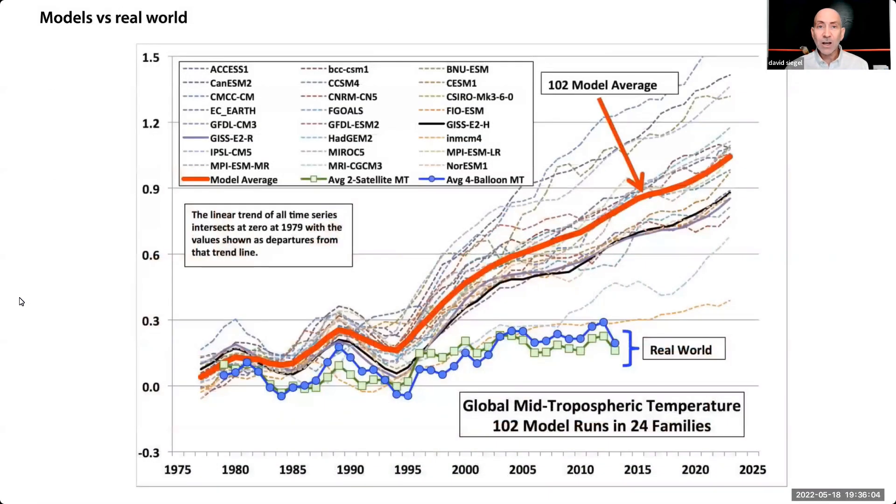Climate modelers have been at this for a long time and have never predicted temperatures correctly. After 40-plus years and billions of dollars worth of modeling, all we have are scary graphs that don't represent reality. Why do modelers continue to get it so wrong? Why do they keep getting paid to get it so wrong? Because these are the graphs the public wants to see.